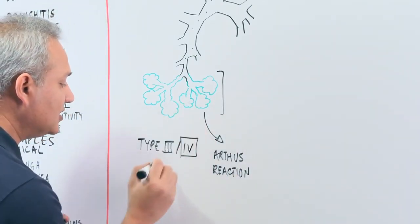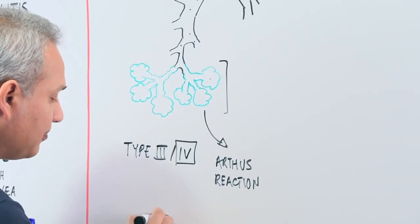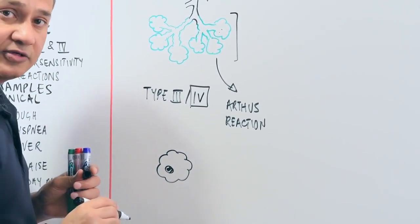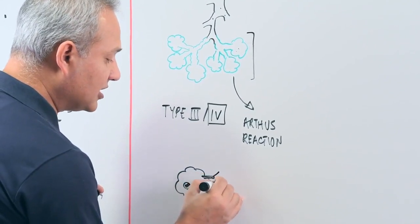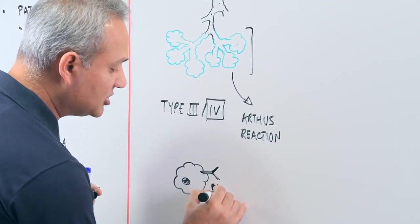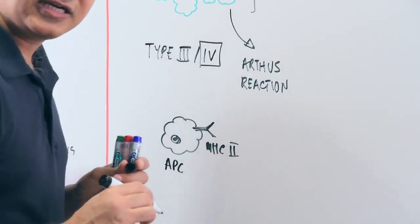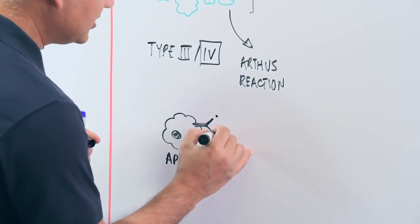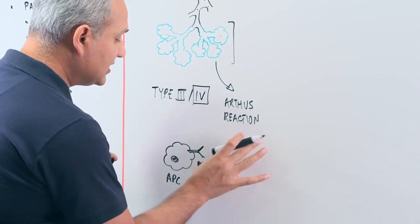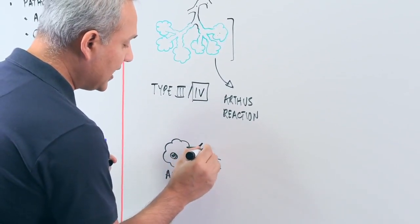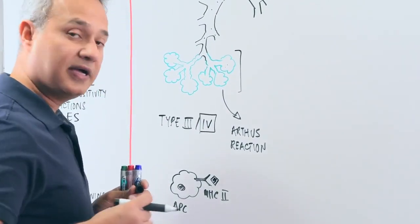So what happens when the allergen comes in? Let's say it is here. The local macrophages pick up that allergen and they break it down. These allergens are then presented on the macrophage as MHC2. Remember macrophage is an APC, antigen presenting cell. So it presents the allergen on the MHC2. When it presents it on MHC2, what happens is that the localized T cells become active.